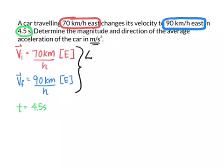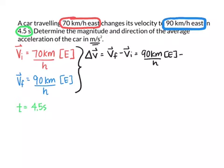First, we're going to calculate the change in velocity. Our change in velocity equals our final velocity minus our initial velocity — so 90 kilometers per hour east minus 70 kilometers per hour east. Our change in velocity is 20 kilometers per hour east.